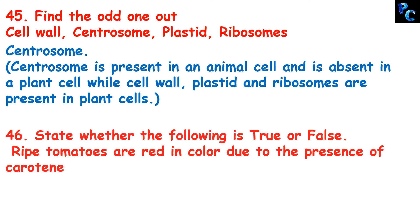State whether the following is true or false: ripe tomatoes are red in color due to the presence of carotene. Yes, that is true. Ripe tomatoes are red in color due to the presence of the pigment carotene inside the chromoplast.